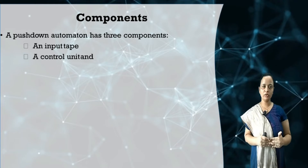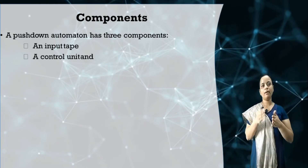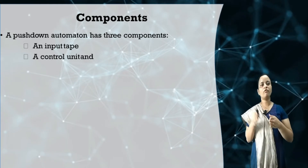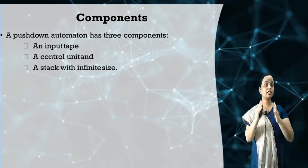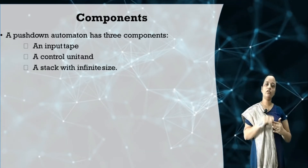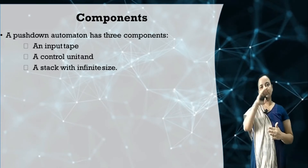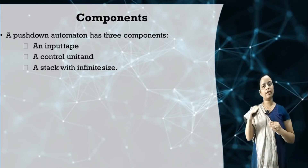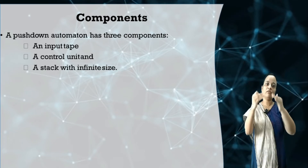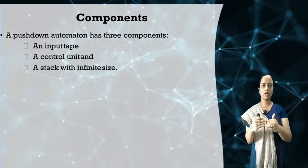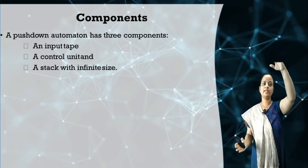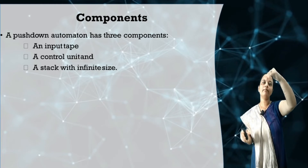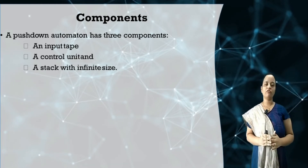The second component is the control unit, which uses transitions to move from one state to another state. The third component is the stack. In finite automata there are only two components — the input tape and the control unit — but in a PDA the third component, the stack, is included, which makes the PDA more powerful. The stack has infinite size, which is why it can remember an infinite amount of information.